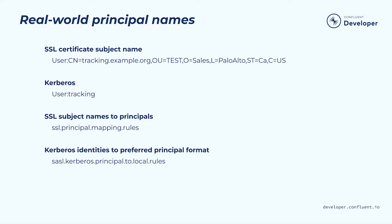The previous example showed simple principal names such as User:Alice and User:Fred, but in real-world deployments these principal names can be more complex. If you use the SSL security protocol to authenticate clients, the principal name will be in the form of the SSL certificate subject name. If you use the SASL_SSL security protocol with Kerberos authentication, the principal will adopt the Kerberos principal format. You can configure the way the principal is derived from the identity — just configuration, no custom code. To map SSL subject names to a principal, configure ssl.principal.mapping.rules. To map Kerberos identities to your preferred principal format, use sasl.kerberos.principal.to.local.rules.